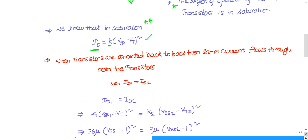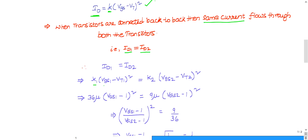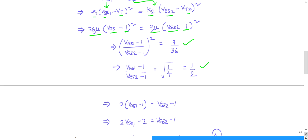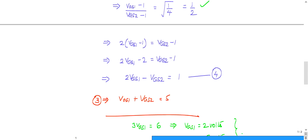Since the transistors are connected back to back, the same current flows: ID1 equals ID2. Substituting: k1(VGS1 − Vt)² = k2(VGS2 − Vt)². Plugging in k1 = 36 micro, k2 = 9 micro, and Vt = 1 volt, we get 36(VGS1 − 1)² = 9(VGS2 − 1)².